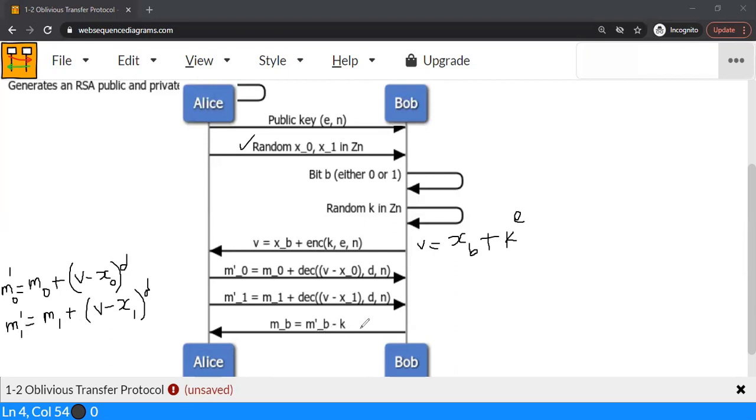So Bob, there was no reason for Bob to, the arrow mark was wrong here. It should be self. You know, Bob is not going to tell Alice, of course, which message did he read. So he's not going to tell that. So Bob receives both M0 prime and M1 prime. And he's going to compute his message MB. He knows the B. B could be either 0 or 1. So he'd only take one of the messages. M, let me call it M prime B, which could be either M0 prime or M1 prime. And he subtracts K from it. Let me explain why this is correct.